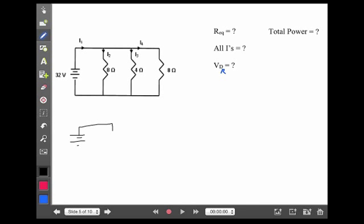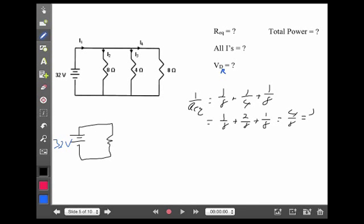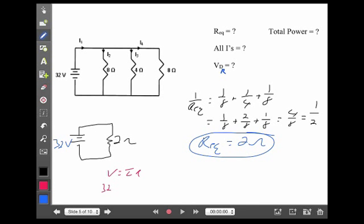32 volts. 1 over REQ is 1 over 8, plus 1 over 4, plus 1 over 8. So, in common denominators, that's 1 over 8, plus 2 over 8, plus 1 over 8, which is 4 eighths, or 1 half. So, that means that REQ itself will be 2 ohms. So, there is a 2 ohm resistor in this simple circuit. Now, using Ohm's Law, 32 volts and 2 ohms gives a current of 16 amps.